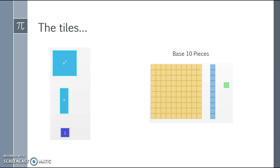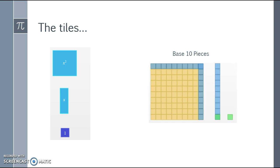Our x squared looks similar to our flat or our hundreds, our x looks similar to our long, and our unit also looks very similar to our unit in base 10 pieces. We know that with base 10 pieces, if I have 10 units together, that make a long, or if I put 10 longs together, I make a flat.